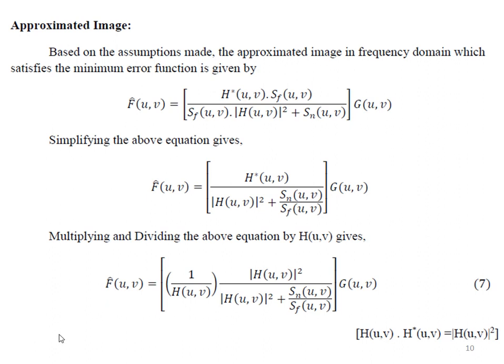In the frequency domain, the approximated image equation is derived such that the minimum error function satisfies e² = E[(f − f̂)²]. The approximated image in the frequency domain gives: F̂(u,v) = [H*(u,v) · Sf(u,v)] / [Sf(u,v) · |H(u,v)|² + Sn(u,v)] · G(u,v). Dividing numerator and denominator by Sf(u,v) and substituting Sn(u,v)/Sf(u,v):